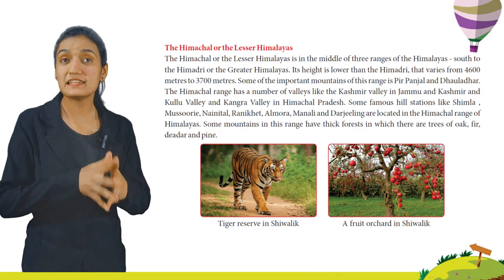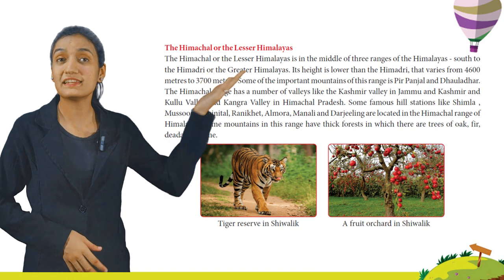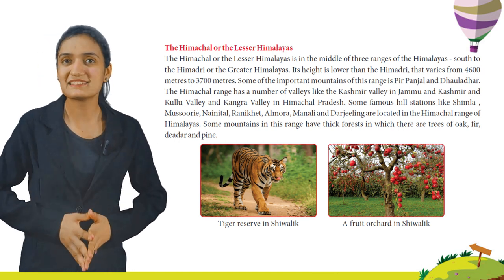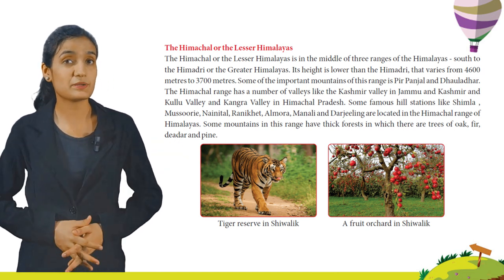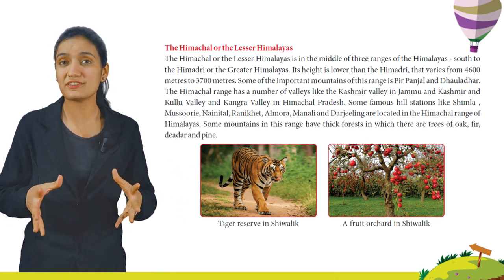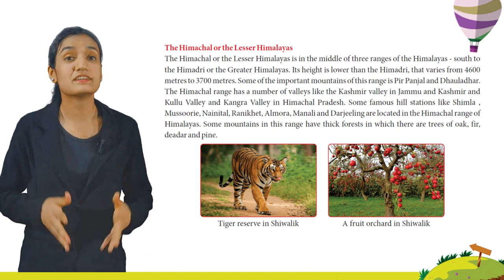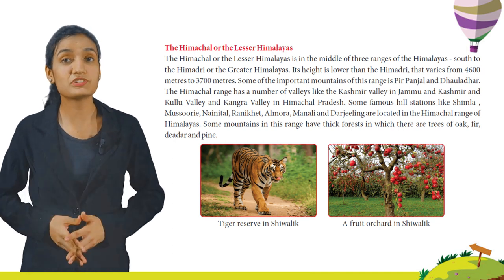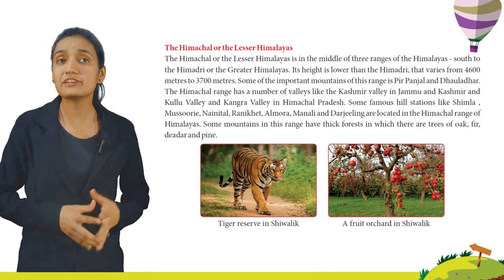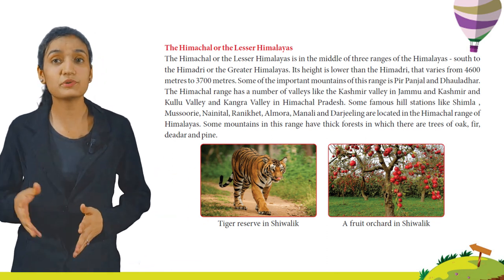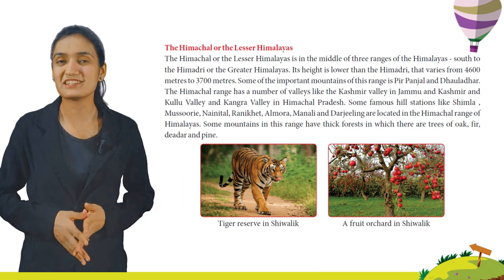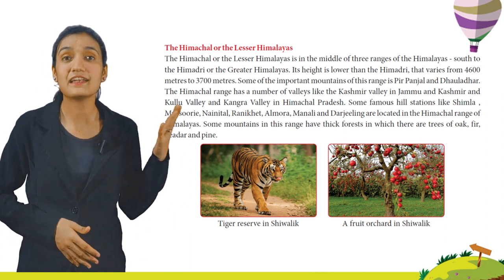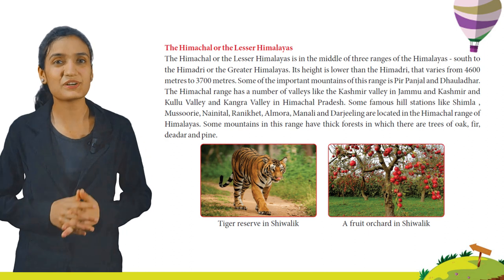The Himachal or the Lesser Himalayas is in the middle of the three ranges of the Himalayas, south of the Himadri or the Greater Himalayas. Its height is lower than the Himadri, varying from 3,700 meters to 4,600 meters. Some important mountains of this range are Pir Panjal and Dhauladhar. The Himachal range has a number of valleys like the Kashmir Valley in Jammu and Kashmir and Kangra Valley in Himachal Pradesh. Famous hill stations like Shimla, Mussoorie, Nainital, Ranikhet, Almora, Manali and Darjeeling are located in the Himachal range.